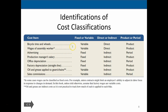Looking at some examples — fixed or variable, direct or indirect, and product or period costs. For bicycle tires: if we produce bicycle wheels, the costs are variable by the bike; they're direct in terms of the production of the bike; and they're product costs because they are part of the bike we're manufacturing. Wages for the assembly worker are variable because they change with the production process; direct because they're right in the bike process; and product because those expenses are directly tied to the production of the bike — we put them as part of inventory and do not expense those wages.